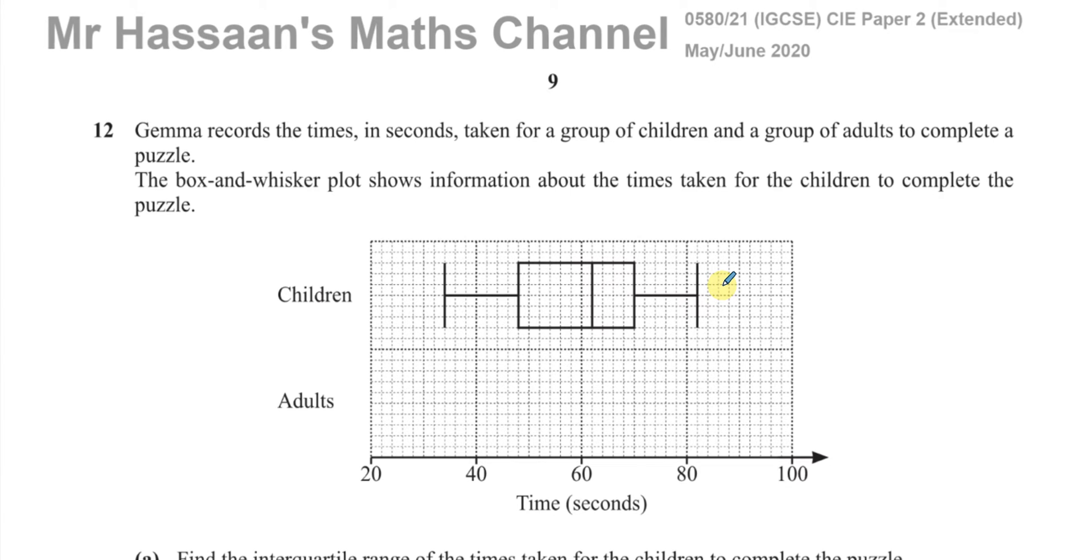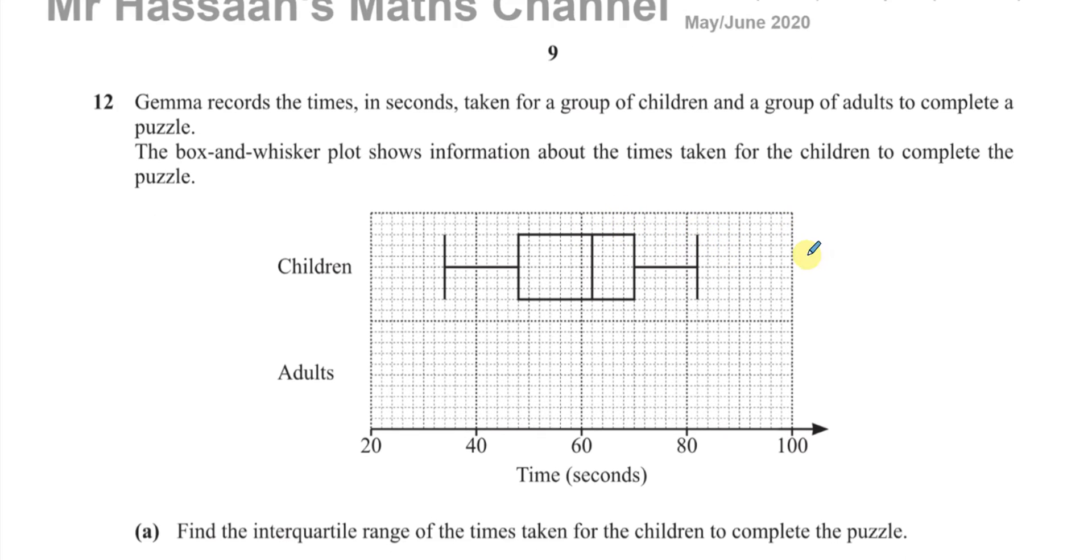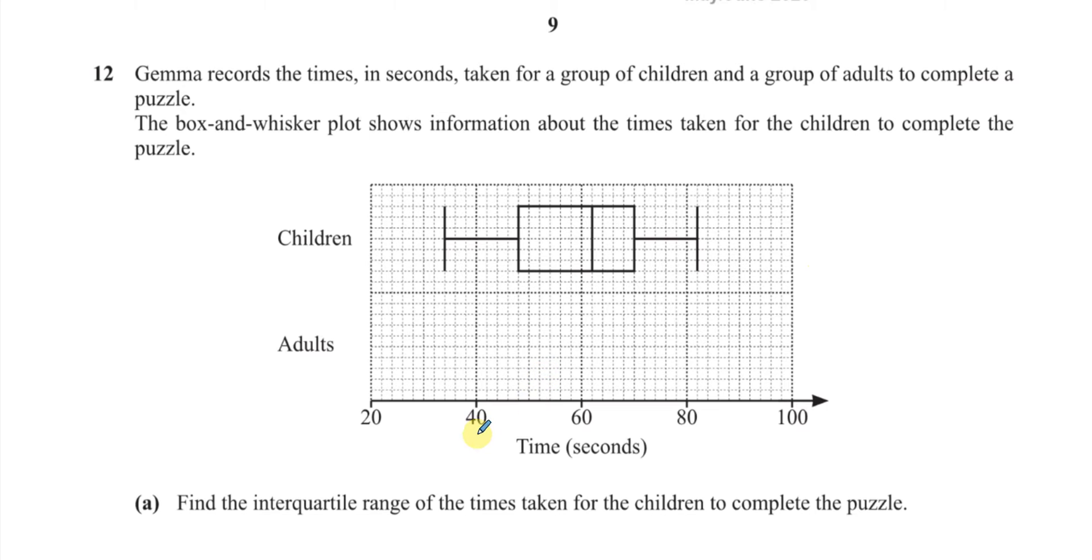So this is the lowest value. This is Q1, the lower quartile, Q2, the median, Q3, the upper quartile, and the upper value. So it tells us to find the interquartile range of the times taken for the children to complete the puzzle.